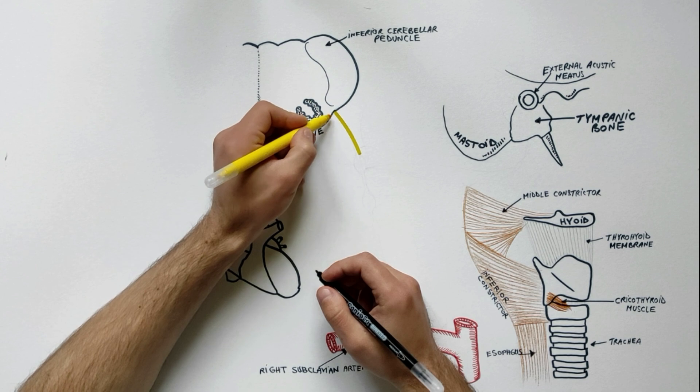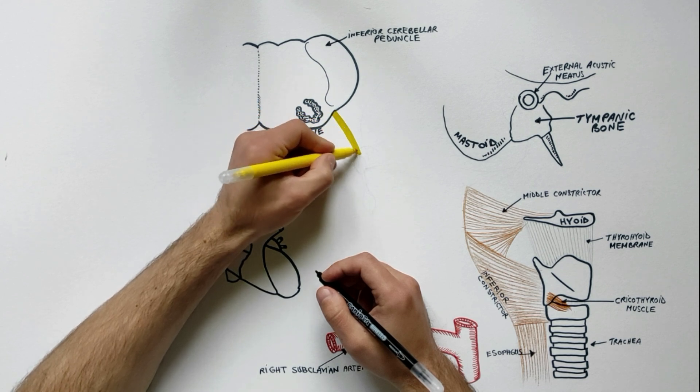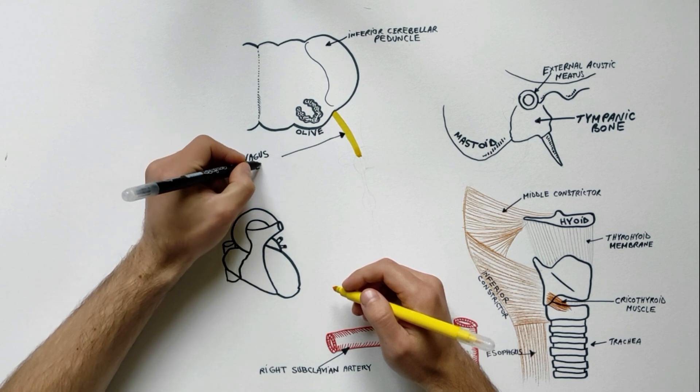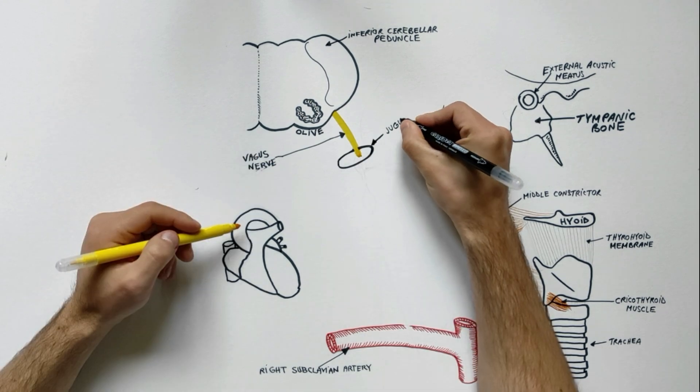The vagus nerve arises from the lateral aspect of the medulla between the olive and inferior cerebellar peduncle and exits the skull through the jugular foramen.